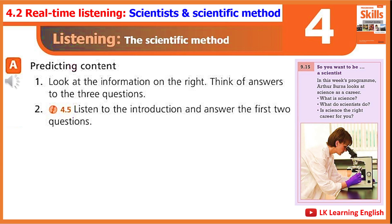This week on So You Want To Be, we are looking at the job of a scientist. What is science? What do scientists do? And, possibly the most important question of all, is science the right career for you? First, what is science? Science is the study of how things work in the world. The word science comes from Greek and Latin words, meaning to know.